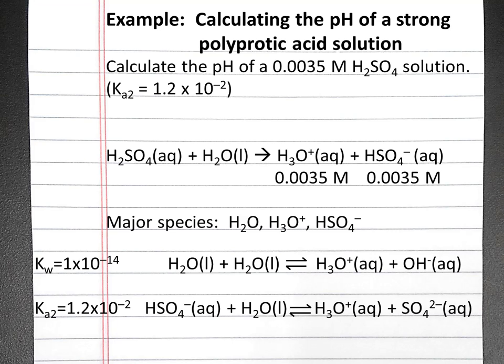For our reaction with hydrogen sulfate and water, a hydronium ion and a sulfate anion will be produced, and that equilibrium constant is 1.2 times 10 to the negative second. This is the equilibrium reaction that will have the greater contribution of hydronium ions to our pH.